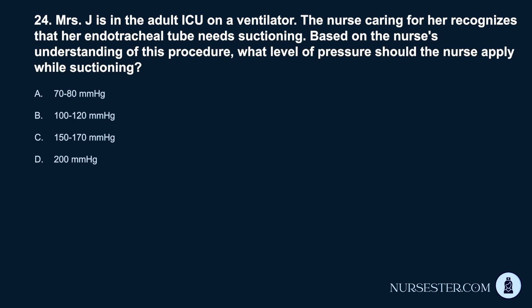Question 24. Mrs. J. is in the adult ICU on a ventilator. The nurse caring for her recognizes that her endotracheal tube needs suctioning. Based on the nurse's understanding of this procedure, what level of pressure should the nurse apply while suctioning? A. 70–80 mmHg. B. 100–120 mmHg. C. 150–170 mmHg. D. 200 mmHg.